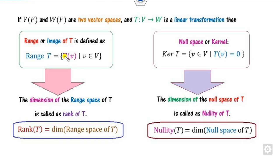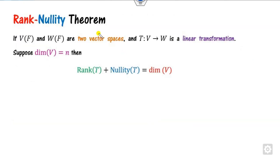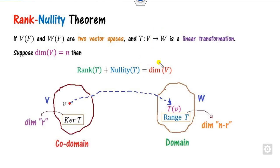The number of elements satisfying this condition is called the dimension of the range space, which is called the rank of the transformation. The dimension of the null space, also called the kernel, is called the nullity. Based on rank and nullity, the Rank Nullity Theorem states that their sum equals the dimension of the co-domain.